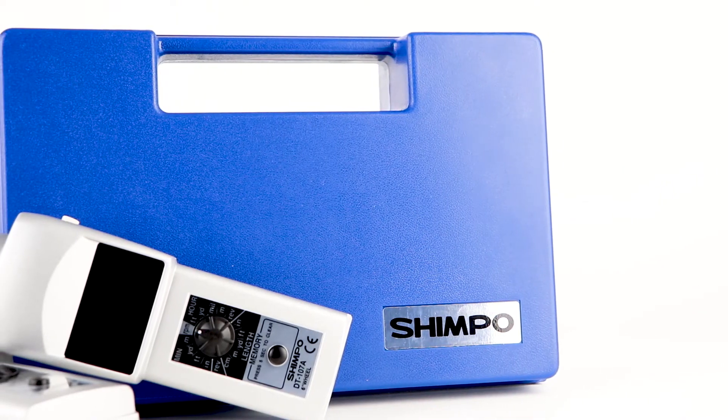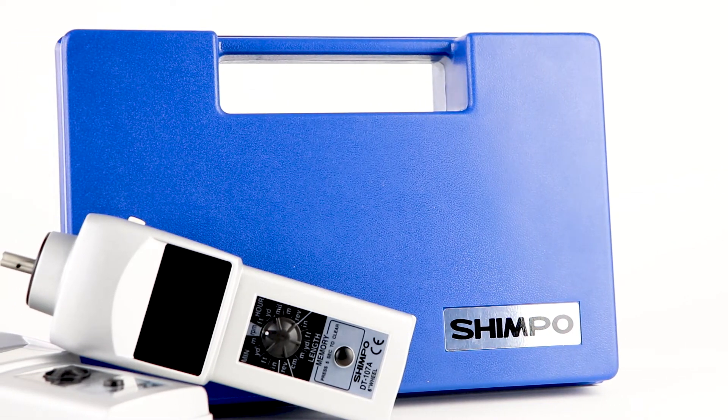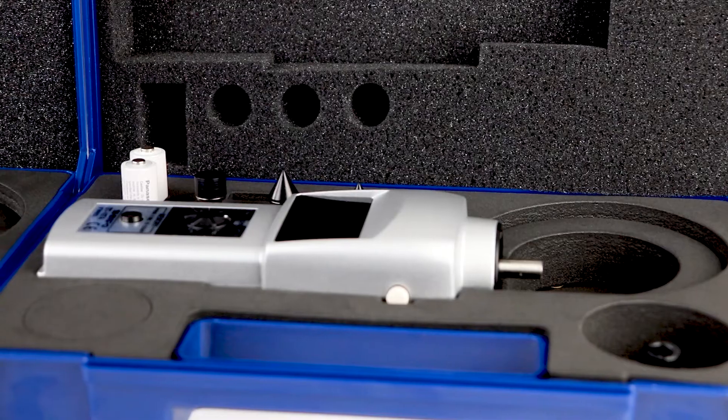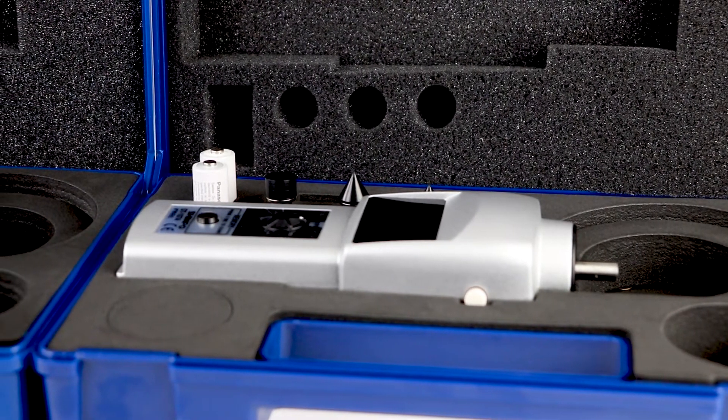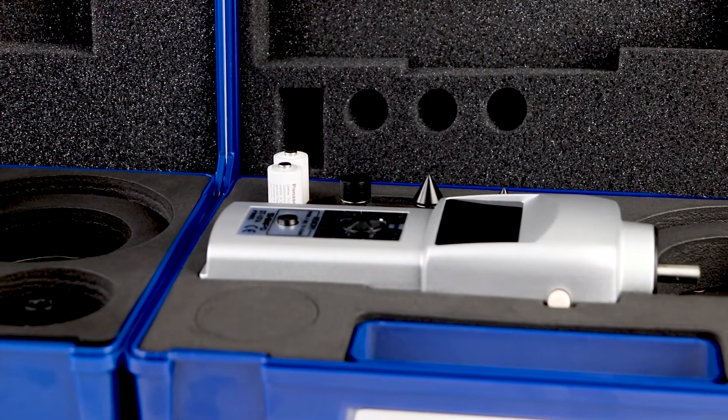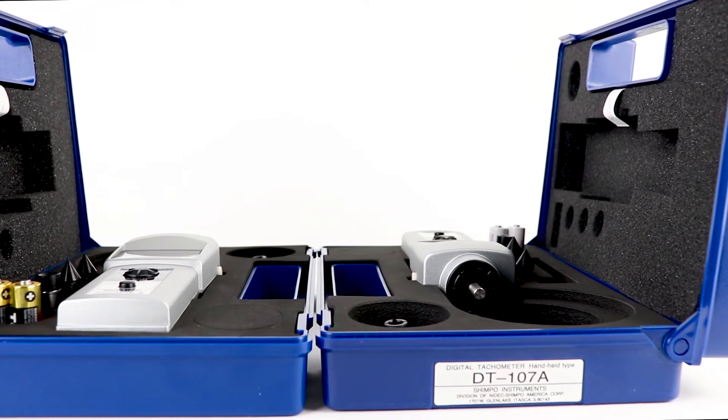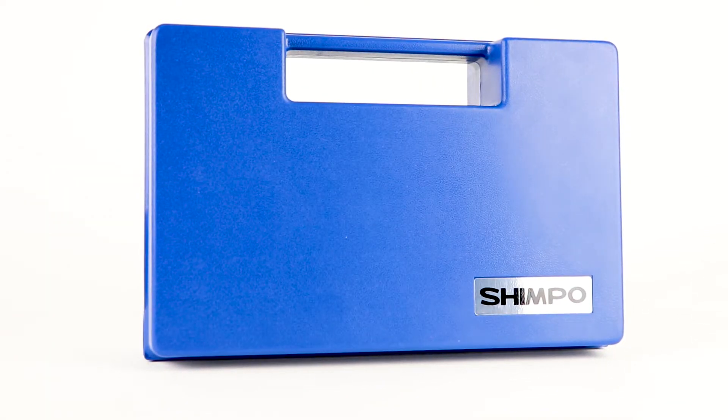All models are supplied as a complete kit, including a 6-inch circumference surface speed wheel, two cone tip adapters, a funnel tip adapter, shaft extension, two AA batteries, NIST traceable calibration certificate, and an operating instruction manual, all supplied in a foam-fitted carrying case.